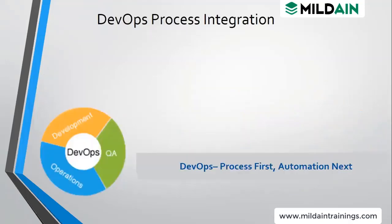DevOps is process first and automation second. We say process first because when we apply DevOps it means dev and ops are working in total collaboration with each other in a continuous manner. As soon as developers check in code, it goes for testing. In that state if there is any issue it goes back to the developer — this is called a gated check-in.